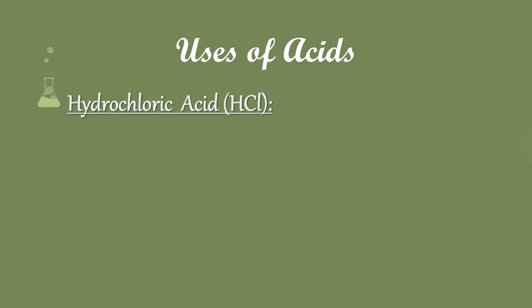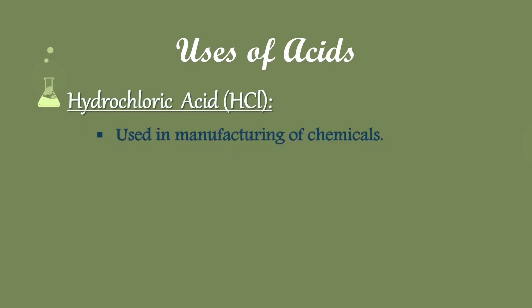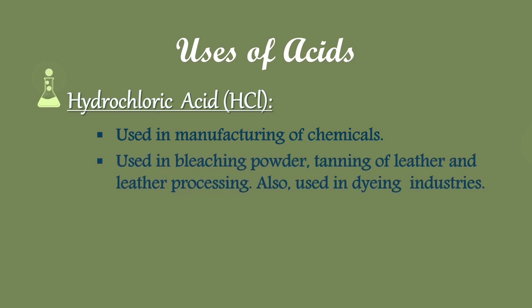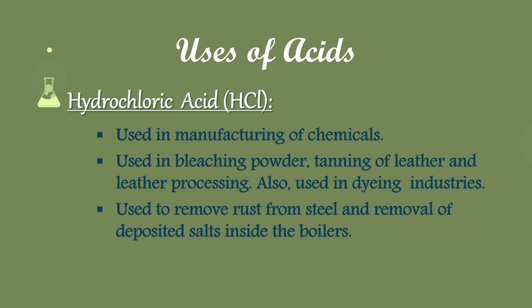Hydrochloric acid: Hydrochloric acid is used in manufacturing of chemicals. It is used in bleaching powder, tanning of leather and leather processing. It is also used in dyeing industries. Hydrochloric acid is used to remove rust from steel and removal of deposited salts inside the boilers.